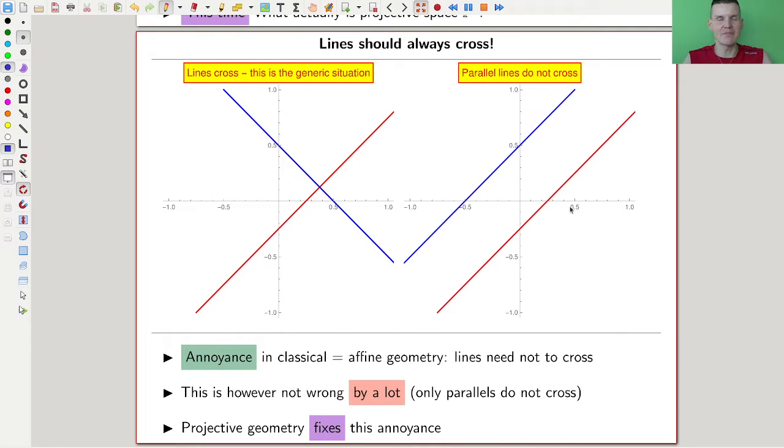But eventually people realized projective is easier than non-projective, so affine, so classical, whatever you want to call it. Classical geometry, affine geometry. Because you have fewer special cases. This is kind of a really crucial selling point of projective land. Projective land, where everyone wants to go. Projective land, because you have fewer special cases.